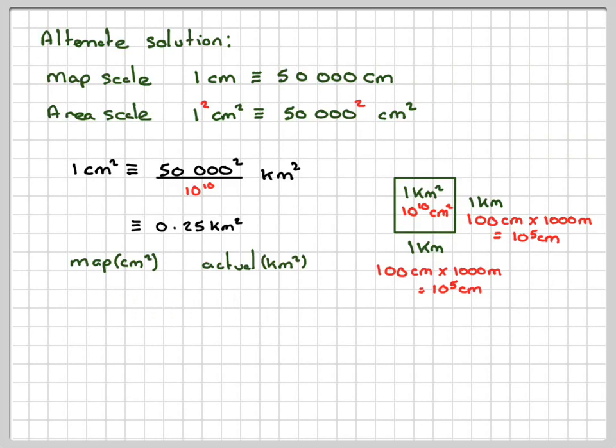If we do map to actual for area, so the area ratio is 1 to 0.25, and then I want this to go up to 12, because I want to know what 12 is. So, that means I multiply that one by 12. I need to multiply that one by 12, which will give me 3, which is the same area as I got before.